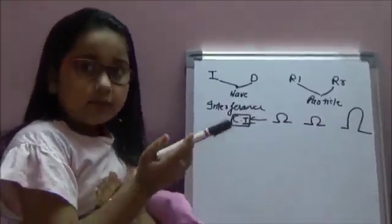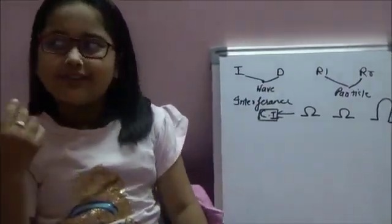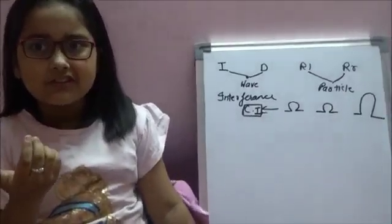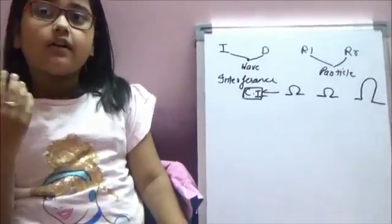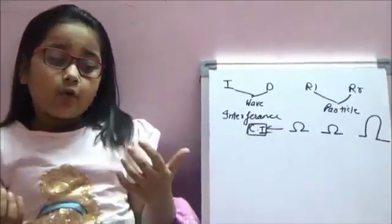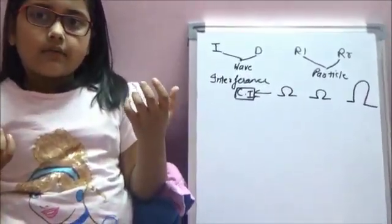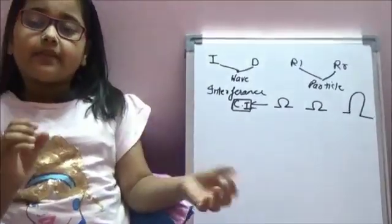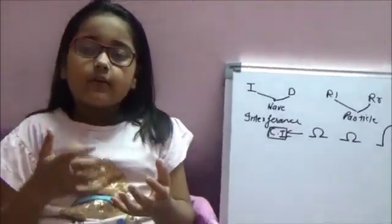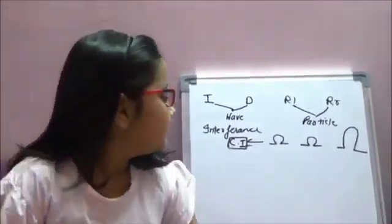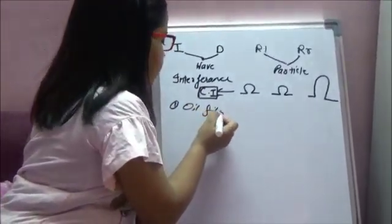Let's understand constructive interference with the help of examples. Have you ever observed a thin film of oil on water? It forms a beautiful pattern. This is due to variation in the thickness of the film. At the center it is thicker, and as we go further from the center, the film becomes thinner and thinner. The reflected light from the center and the sides causes constructive interference, which creates colorful patterns. This is our first example — oil film on water.